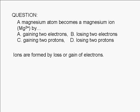Ions are formed by loss or gain of electrons, so immediately we can rule out choices C and D.